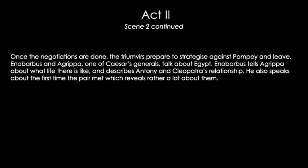Continuing in Scene 2, the triumvirs prepare to strategize against Pompey and leave. Enobarbus — Antony's right-hand man — and Agrippa, one of Caesar's generals, talk about Egypt. Enobarbus tells Agrippa about life there and describes Antony and Cleopatra's relationship, also speaking about the first time the pair met. Take this section with a pinch of salt, as Enobarbus is obviously going to brag — describing massive feasts with twelve boars on the table and more wine than you could possibly imagine, painting a scene of total excess.